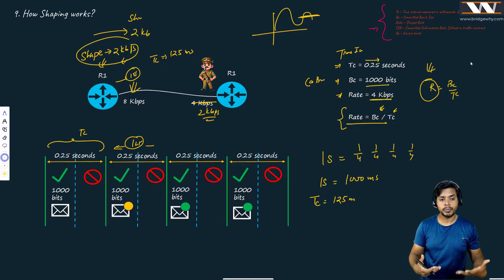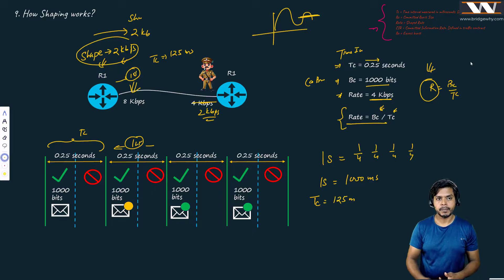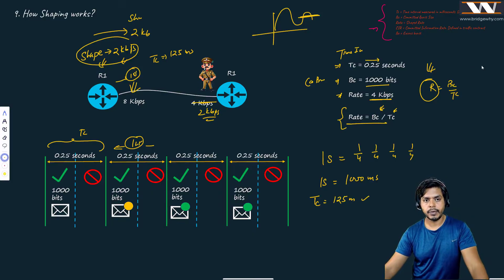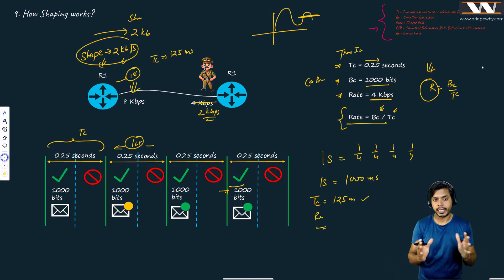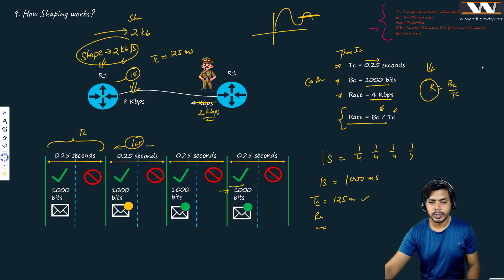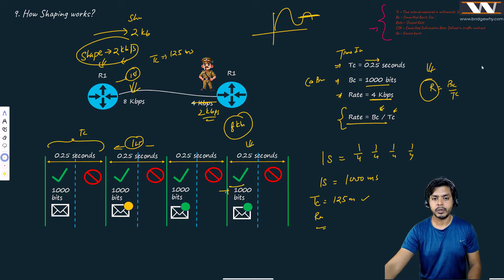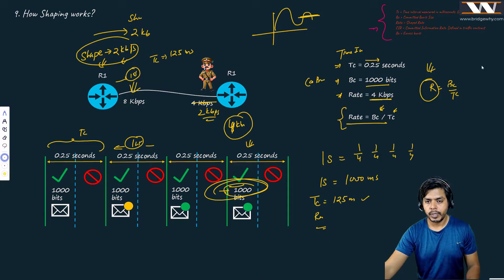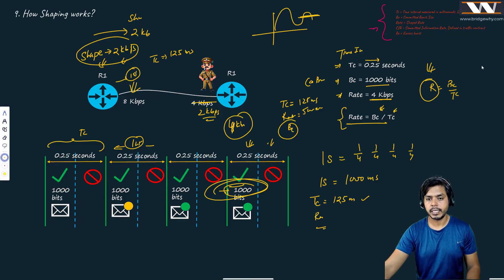I used 0.25 seconds just to explain the concept clearly. If you know TC and the rate, you can calculate how many bits BC to send in that period. For example, if TC is 125 milliseconds and your rate is 500 million bits per second, you calculate BC = Rate × TC. So Rate = BC / TC is the whole formula for shaping.